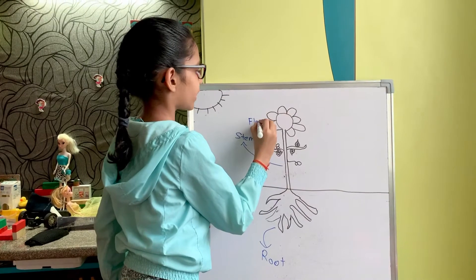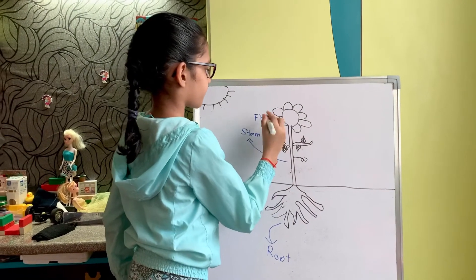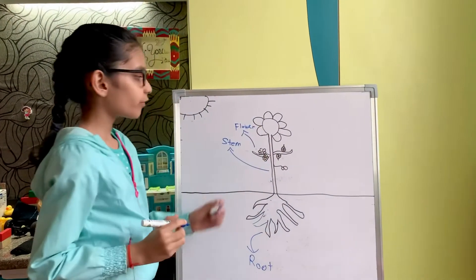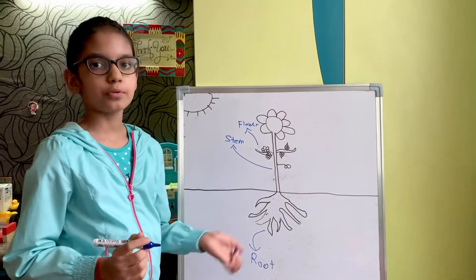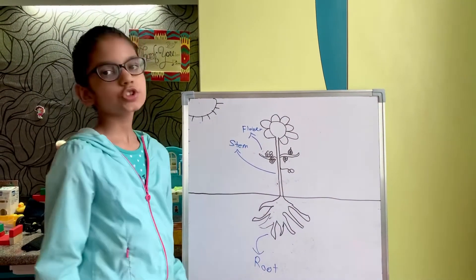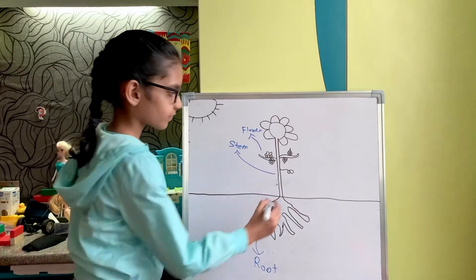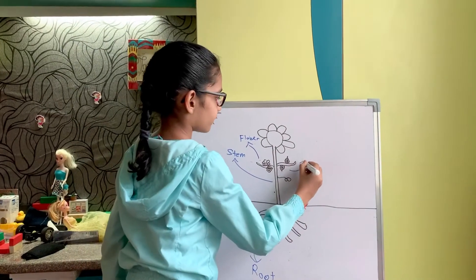The flower has two main functions. It helps the flowering plant to bloom beautifully, and it also changes into a fruit. And now next we have the leaf.